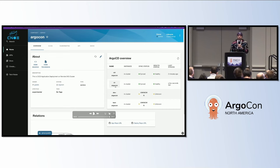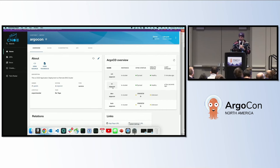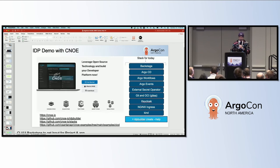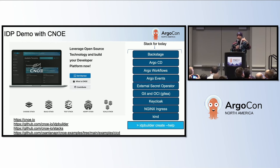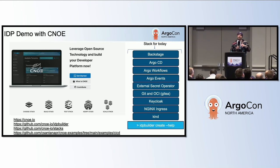The idea is for the platform developer to be able to quickly evaluate or test a platform. This is the Argo CD plugin in Backstage, which links the status and lets you jump directly into the application you're deploying. That was the quick setup. With one command, I built a kind cluster with Backstage, Argo CD, Argo Workflows, Argo Events, External Secret Operator, Keycloak, and NGINX. As a platform team, you're evaluating different tools and stitching them together. You point to a stack and test it. In production, all these stacks and apps are deployed as Argo apps.